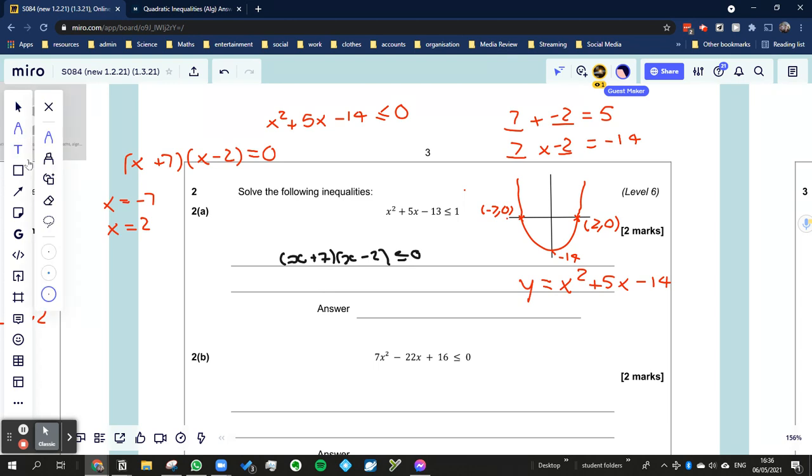Well, it's less than 0 between these two points. It goes below the y-axis between those two points. So basically, we can say that x and because it's between two points we can do a combined inequality.